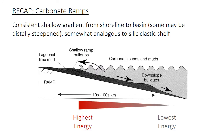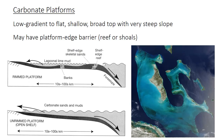A quick recap of previous lectures, which considered the carbonate ramp environment and facies found on carbonate ramps. The ramp is a shallowly dipping surface with a fairly consistent gradient from the shoreline all the way to the basin. The energy distribution on a carbonate ramp is fairly similar to what you find on siliciclastic coastlines, with an energy maximum near the shoreline or beach environment. In contrast, carbonate platforms are large, flat-topped shelves instead of a gently dipping ramp.